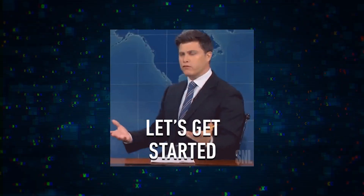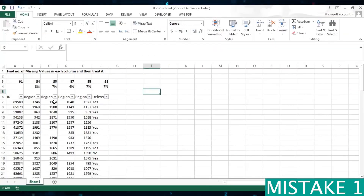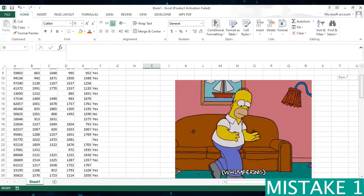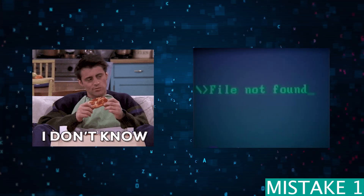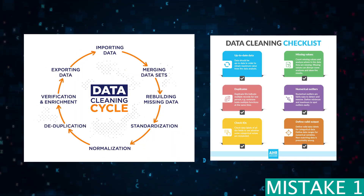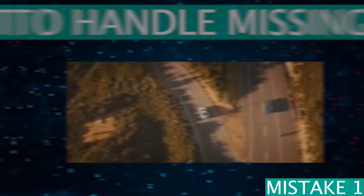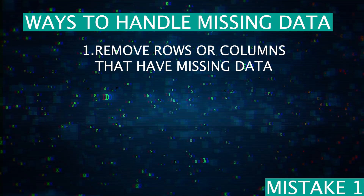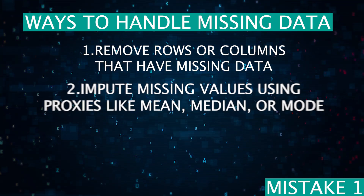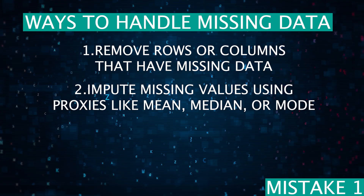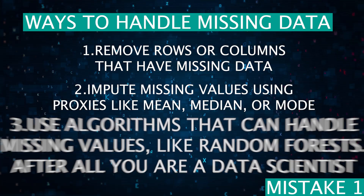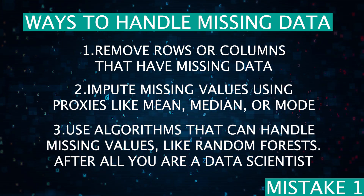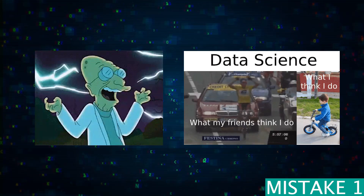One thing you'll notice when cleaning data is that there's almost always missing values. Most people don't know why the data is missing, but this issue can introduce bias and lead to inaccurate conclusions. There are many ways to handle missing data: you can remove rows or columns with missing data, impute missing values using proxies like mean, median, or mode, or use algorithms that can handle missing values — like a random forest — because after all, you are a data scientist.